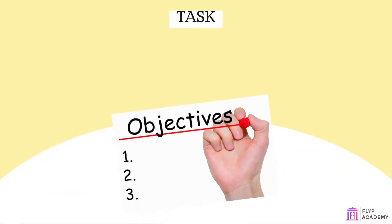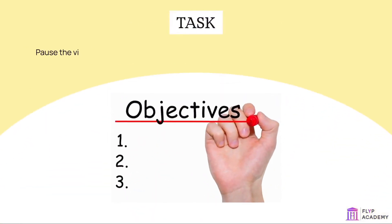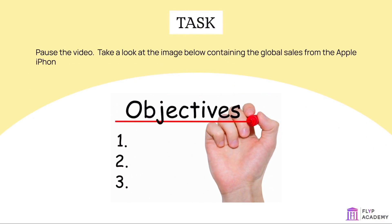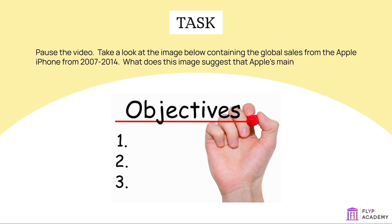Task: pause the video. Take a look at the image below containing the global sales from the Apple iPhone from 2007 to 2014. What does this image suggest that Apple's main objectives are?